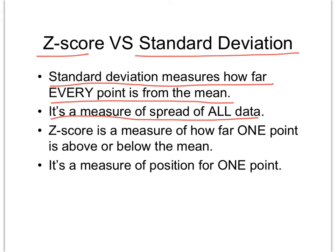In comparison, a z-score is a measure of how far one data point is above or below the mean. It's a measure of only one point. Although we use the standard deviation in the calculation of our z-score, it's so we can see how that one data point compares to all the other data points.